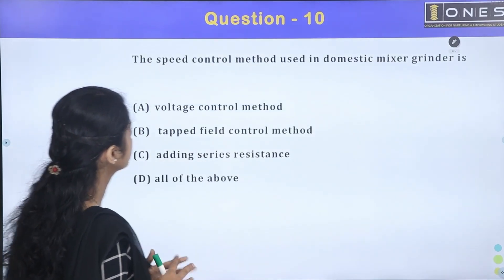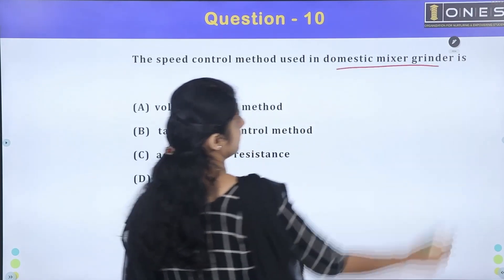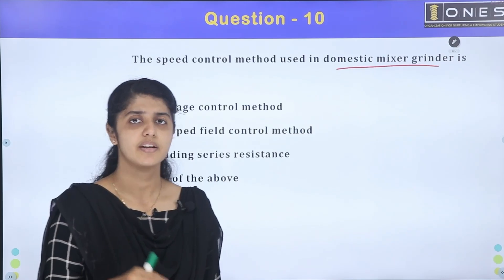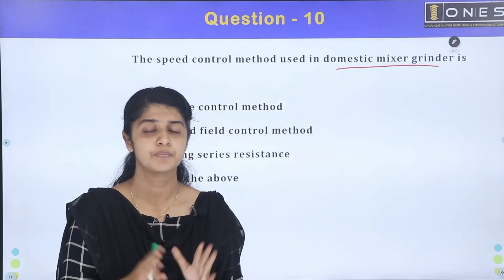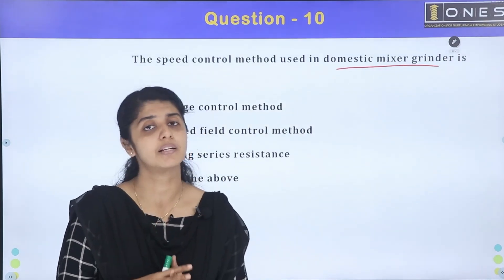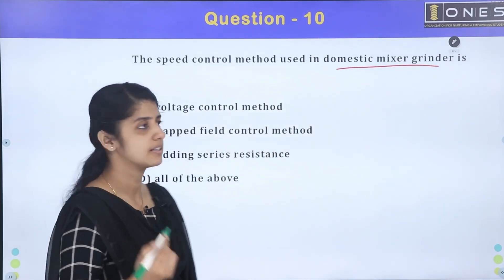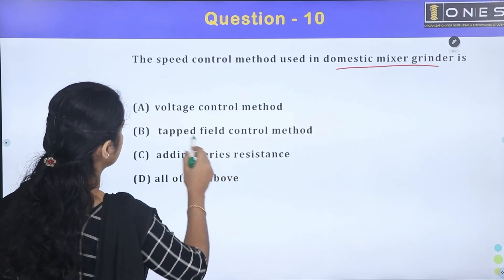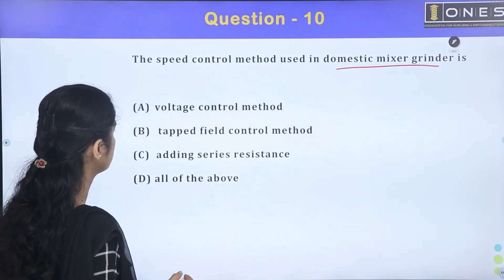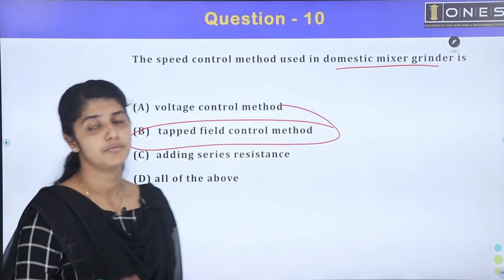The speed control method used in a domestic mixer grinder: domestic applications use a universal motor, which is a series-type motor. The speed control methods available include voltage control method, tap field method, and adding series resistance. The method used in the mixer grinder is tap field control.